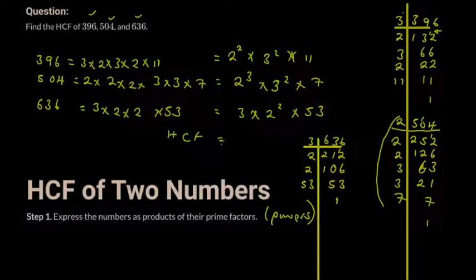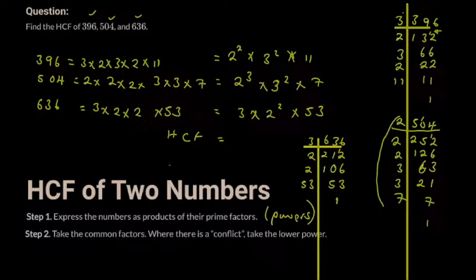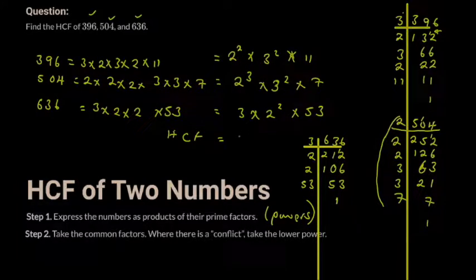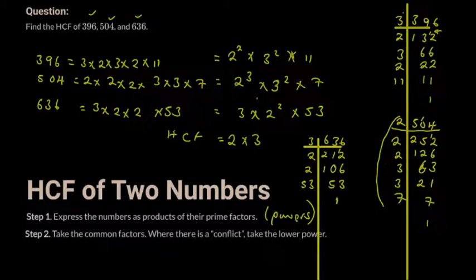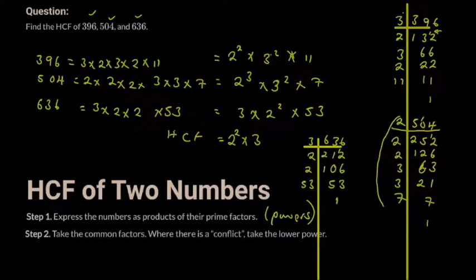HCF equals — the guideline is you take whatever factors are common. Do we have two in common? Yes. Do we have three in common? Yes. Do we have 11 in common? No. Seven? No. 53? No. Where there are conflicts in powers, you take the lower power. For two: powers are 2, 3, 2 — take the lowest, which is 2. For three: powers are 2, 2, 1 — take the lowest, which is 1. So we have two squared times three.